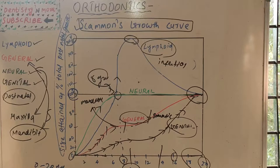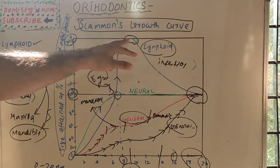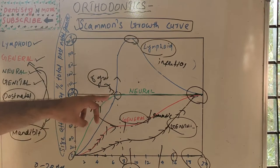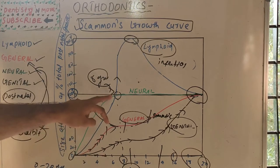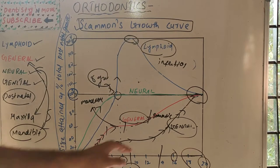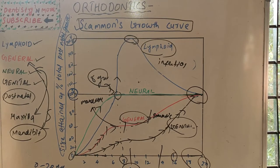In summary, Scammon's growth curve covers four tissues: lymphoid, general, neural, and genital, each with its own growth pattern. Lymphoid reaches 200% during childhood before involuting; neural reaches adult size early at around eight years; general and genital reach adult size by 18 to 20 years. That's all about Scammon's growth curve — I'll come back with a new topic in orthodontics. Thank you.